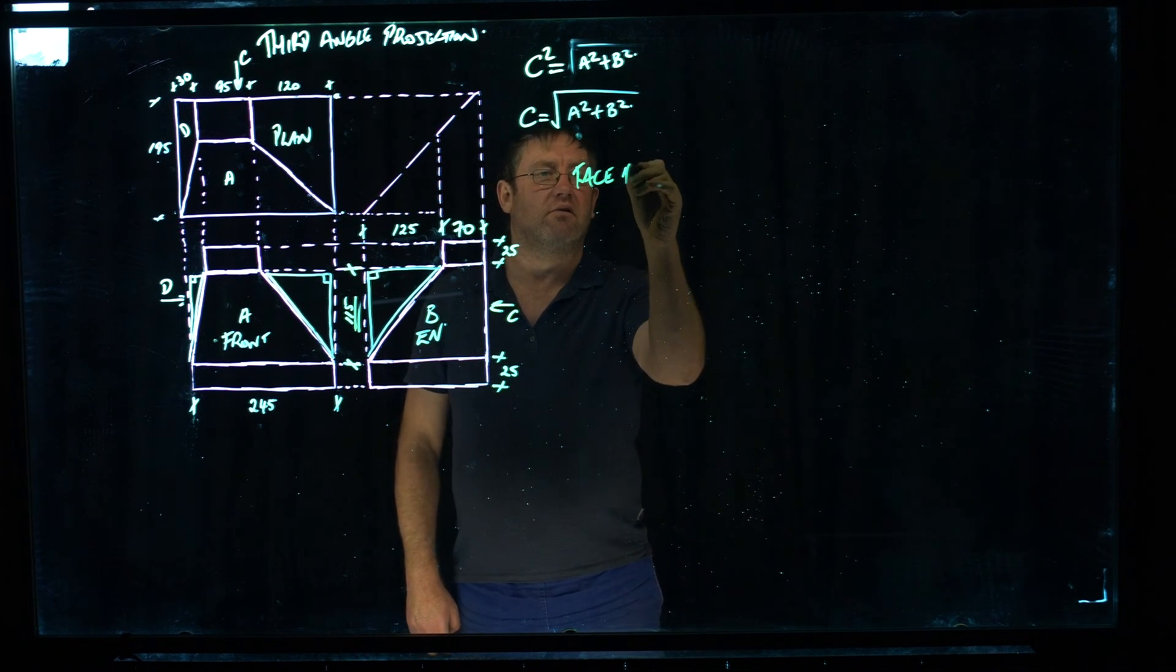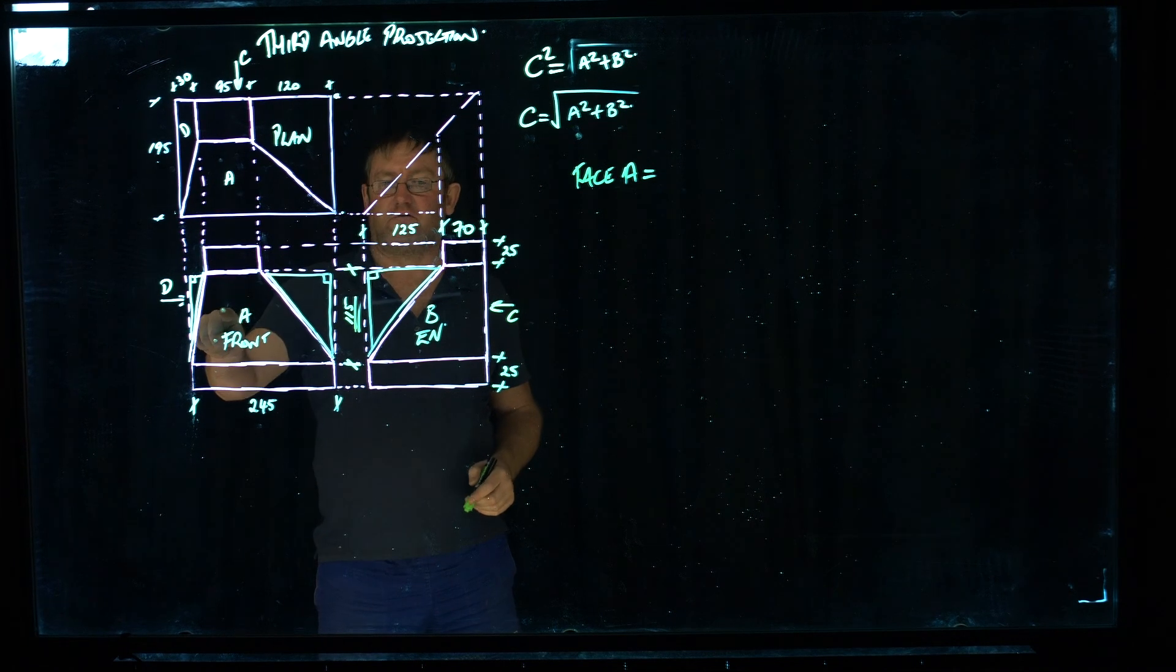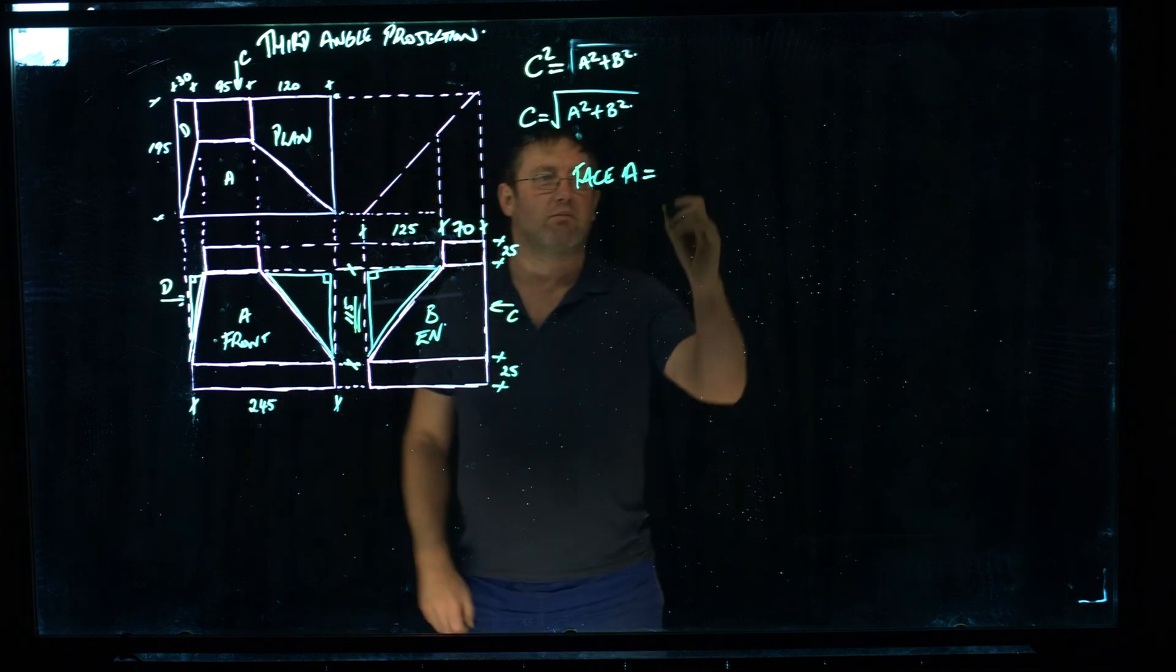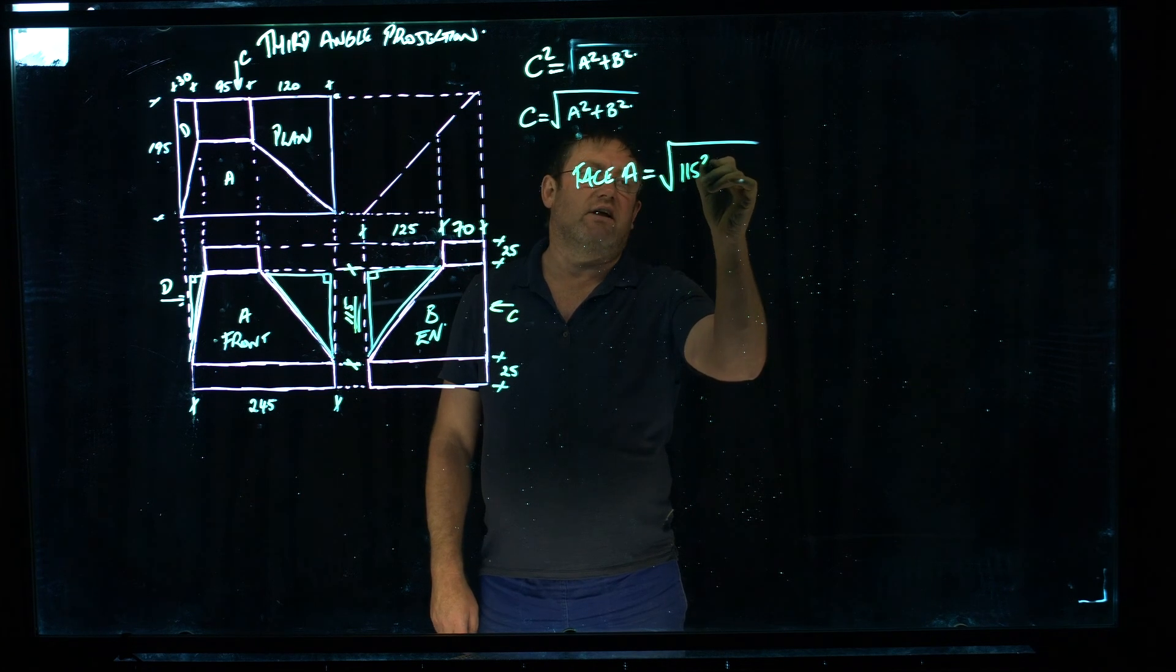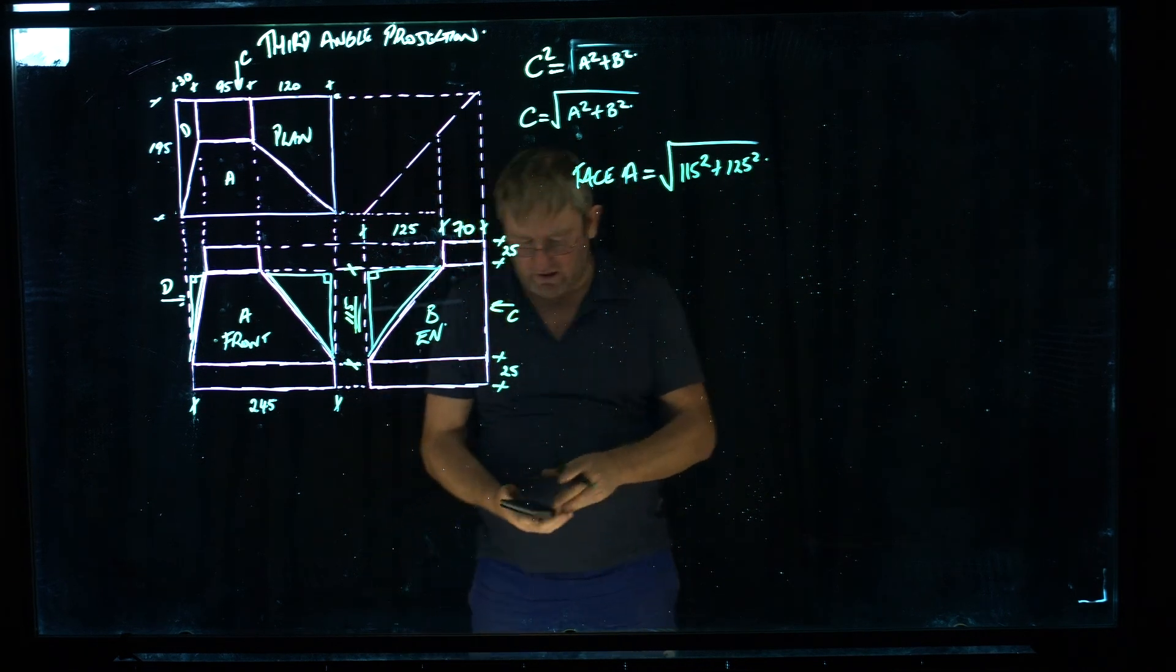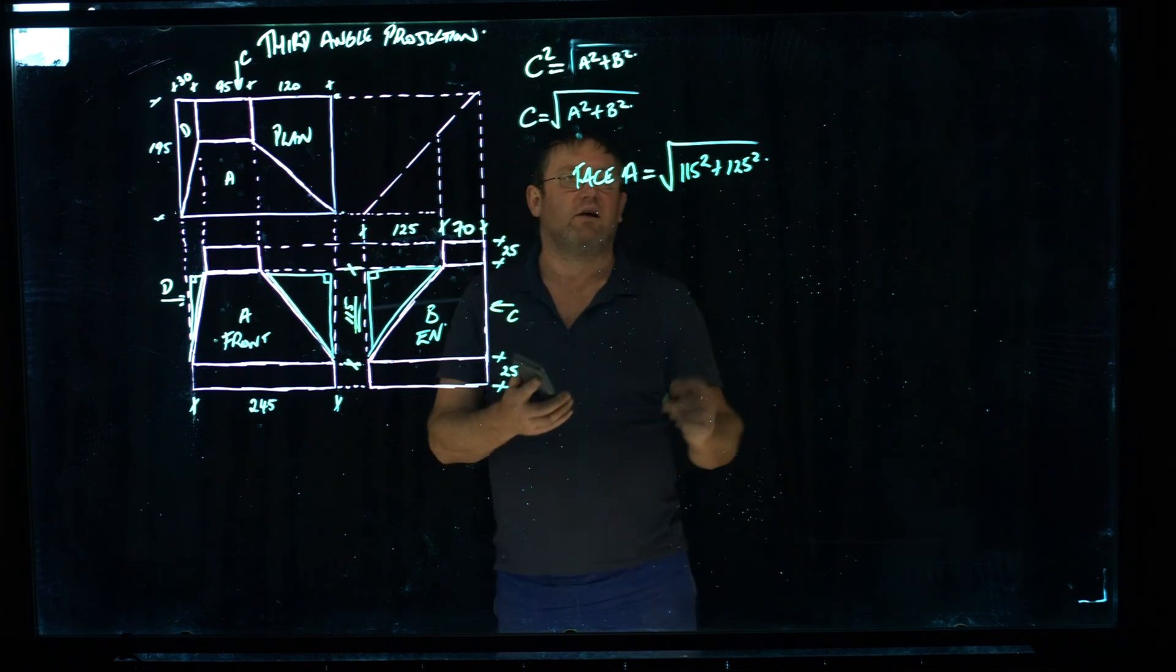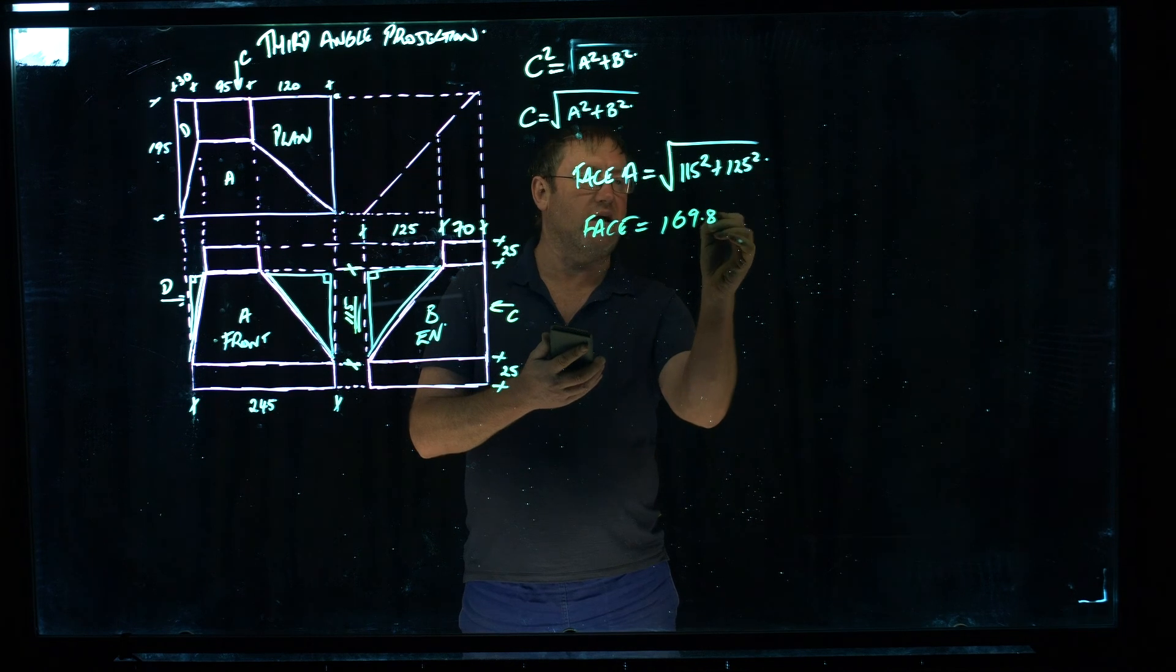So face A, this is it in plan, this is it in front elevation. And it's looking into this face here. So the offset on face A from this point here, from the outside edge to the actual neck on it, is 125mm long. So I'm going to do the square root of A squared is going to be 115 squared, and B squared is going to be 125 squared. So on the calculator, I push square root, and I type in 115 squared plus 125 squared, and the equals sign.